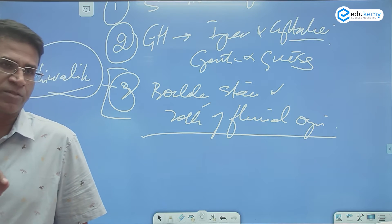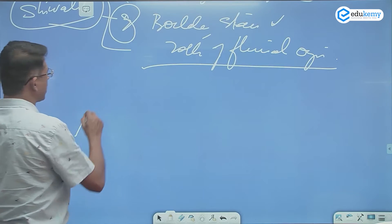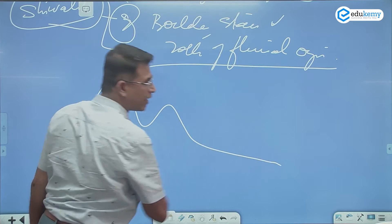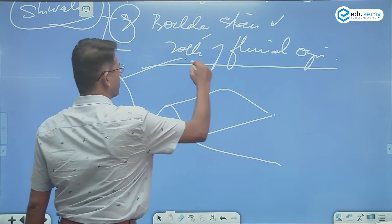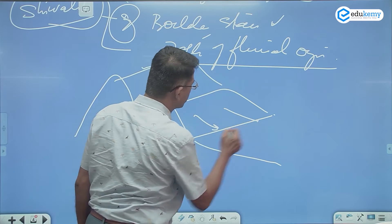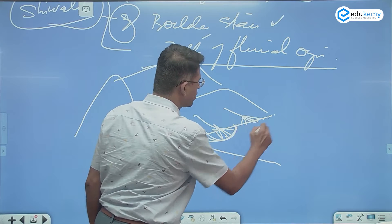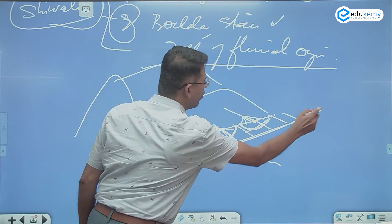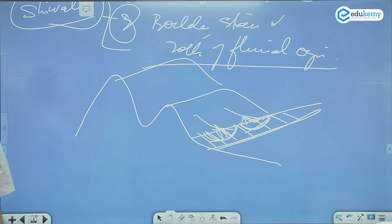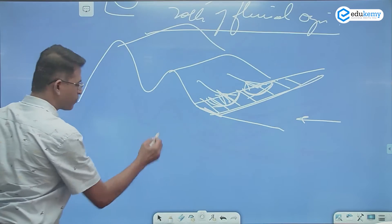Imagine this is the Himalayas and these are its foothills. Rivers come down and deposit alluvial fans. This zone is the zone of fluvial deposition. If compression continued, this part also gets uplifted.